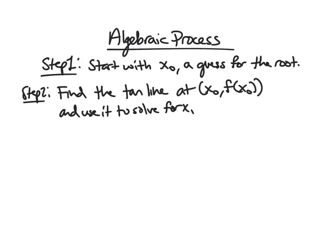Okay, so for the algebraic process, we're going to start with x0. And that's our guess, our first approximation. And then we're going to find the tangent line at the point with x-coordinate x0 on our graph and use it to solve for x1.